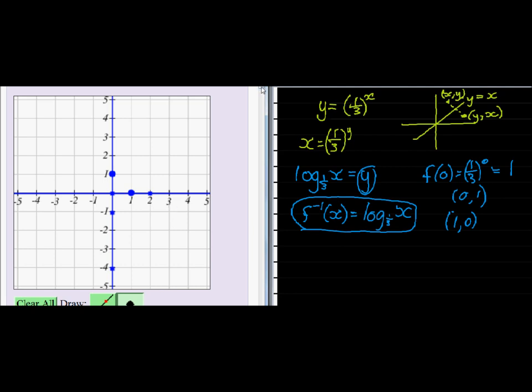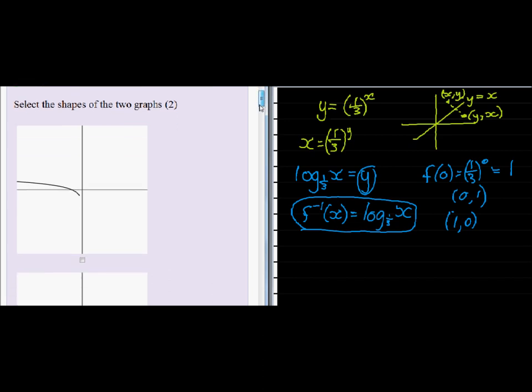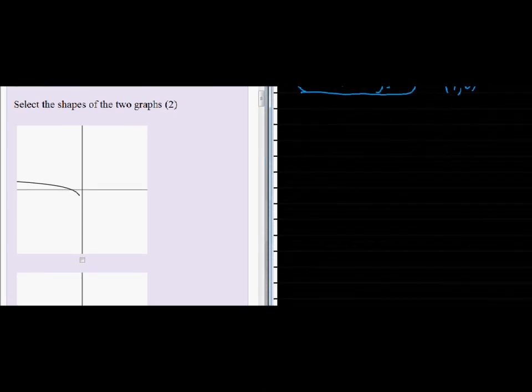The next question is to select the shape of the two graphs. Now, the shape of the exponential function, the most basic shape, looks like this. That's the most basic shape of the exponential function if my base is bigger than one.